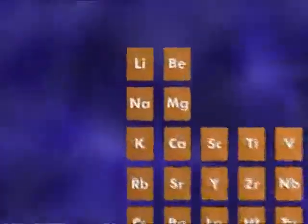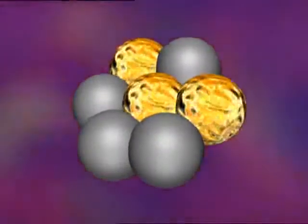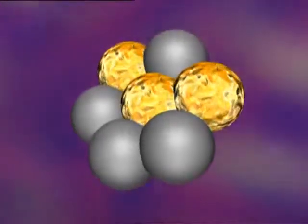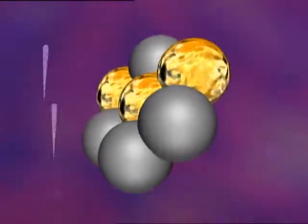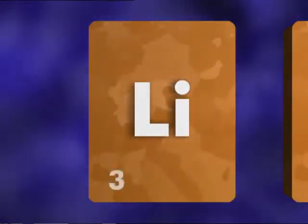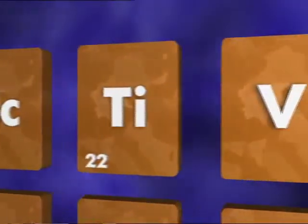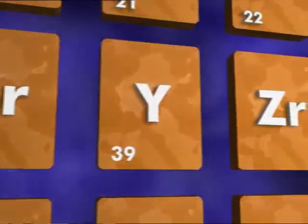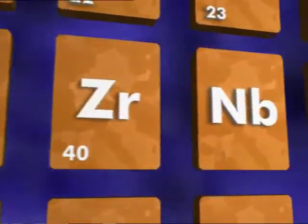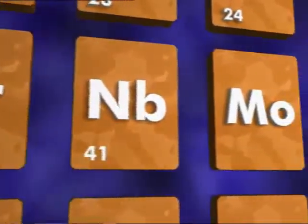The next element along the periodic table is lithium. Orbiting round each lithium atom are three electrons. In the nucleus, there are three protons and four neutrons, so the atomic number of lithium is three. As you move across a row from left to right, the number of protons increases by one, so the atomic number also increases by one. An element's atomic number determines its position in the table.